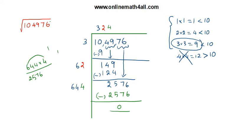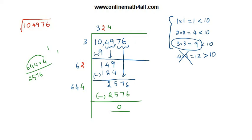We do not have any more digits at the top, and we have brought down all the digits in the given number, and at last we get zero. When you get zero at the end, we can decide the given number — one hundred and four thousand nine hundred and seventy-six — is a perfect square. If instead we got a non-zero remainder, the number would not be a perfect square. But this time we got zero, so the square root of this number equals three hundred and twenty-four.